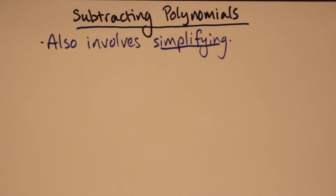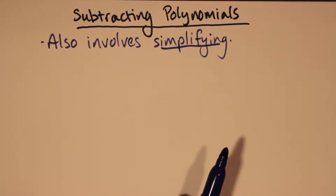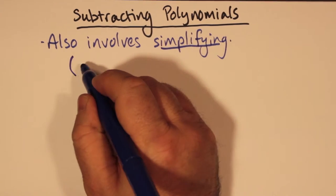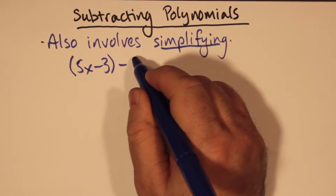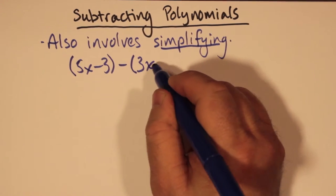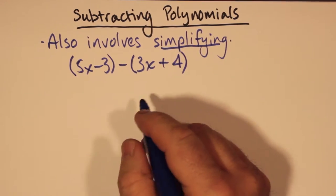Subtracting polynomials also involves simplifying. We can start with a polynomial such as 5x minus 3 minus 3x plus 4. So we're subtracting the polynomial 3x plus 4 from the polynomial 5x minus 3.